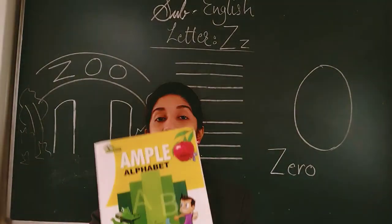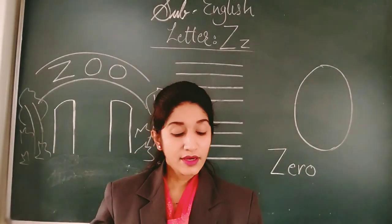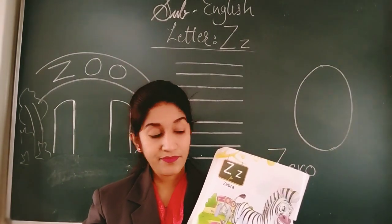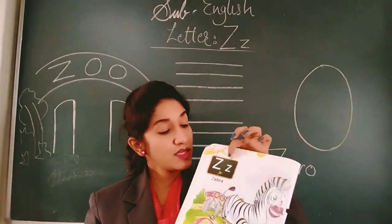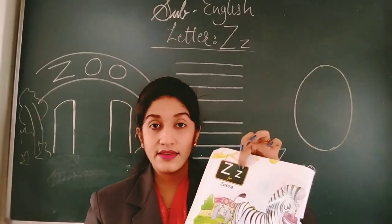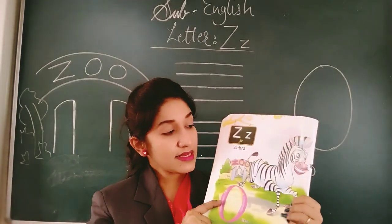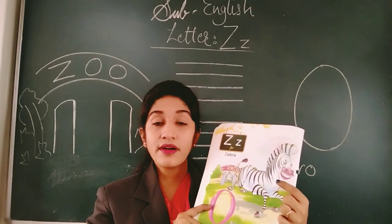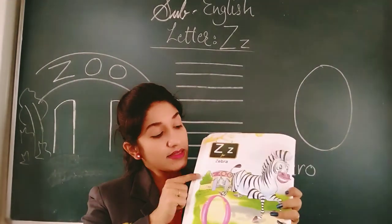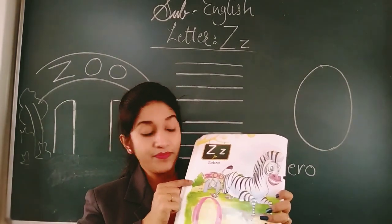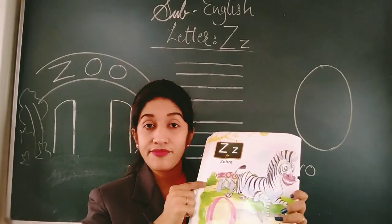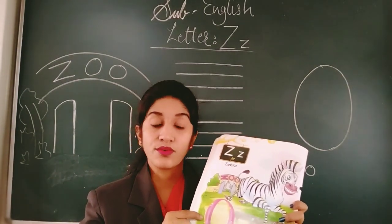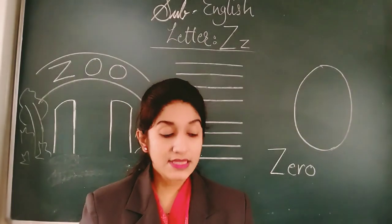So take out your ample alphabet book, page number 36. Alphabet Z — Capital Z, Small Z. Now what is this? This is Z for Zebra. Z for Zoo. Z for Zero.